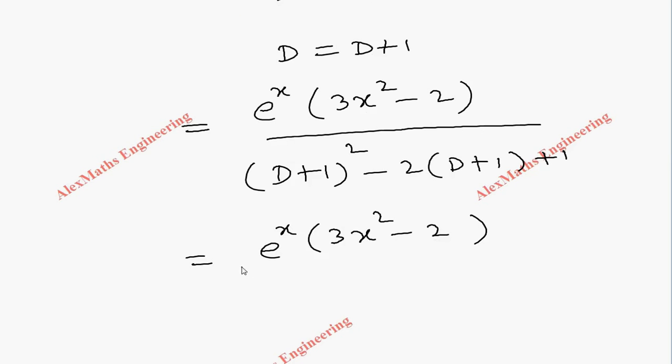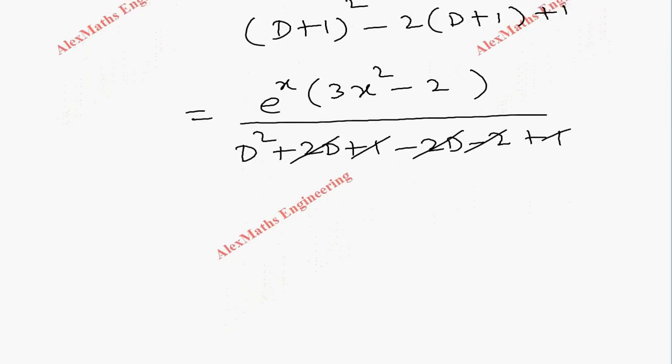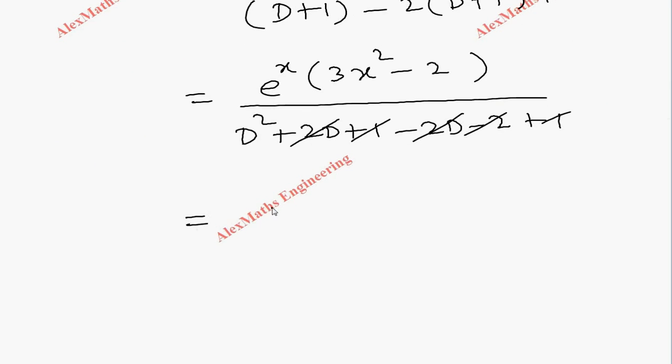Denominator, let me expand this: D squared plus 2D plus 1, then minus 1 you can cancel, plus 2D minus 2D, then 1 plus 1. 2 you can cancel it minus 2. Totally we are left with e to the power x times 1 by D squared.